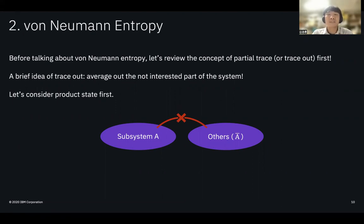In brief, partial trace or trace out is to average out the not-interested part of the system. Let's consider the product state case first. Since the subsystem A and not-interested part A-bar is not entangled, averaging A-bar could not affect subsystem A. In this case, A remains a pure quantum state.